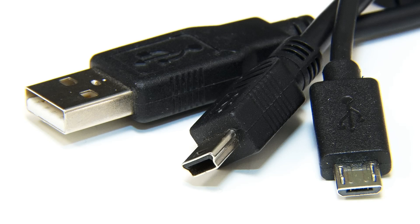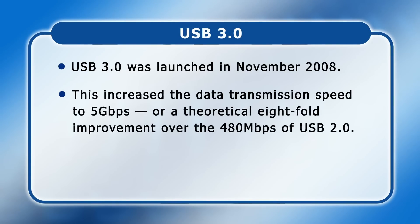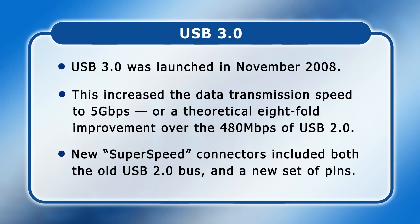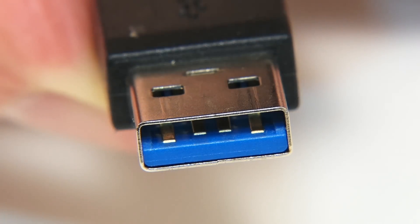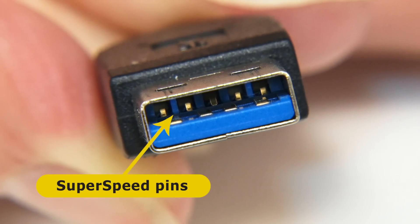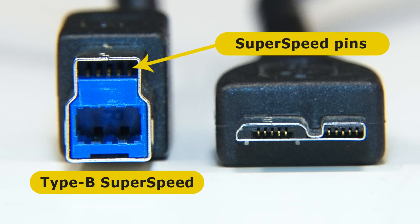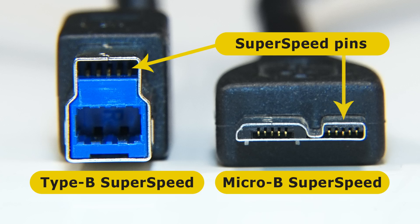November 2008 saw the release of USB 3.0. This increased data transmission speed to five gigabits per second, or a theoretical eightfold improvement over the 480 megabits per second of USB 2.0. To achieve this whilst maintaining backwards compatibility, a new range of SuperSpeed connectors was introduced that included both the old USB 2.0 bus as well as a new set of SuperSpeed pins. Starting with Type A, the SuperSpeed connectors are color-coded light blue and have five new pins at the back in addition to the four legacy pins at the front. On a full-size Type B SuperSpeed connector the additional pins are included on the top, and for a Micro B connector the SuperSpeed bus is on the side.